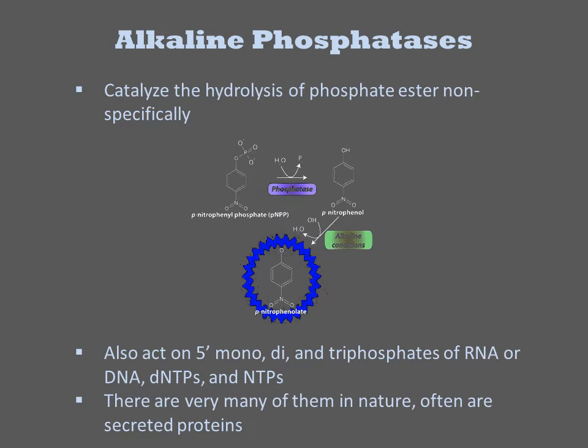The most commonly used class of phosphatases are the alkaline phosphatases. They catalyze the hydrolysis of phosphate esters nonspecifically, so these enzymes are used outside the context of DNA manipulation. For example, you can react an alkaline phosphatase with paranitrophenyl phosphate and release a yellow pigment that can be detected photometrically. The enzyme will act on any exposed nucleic acid phosphate, such as the 5' ends of nucleotides or polynucleotides.